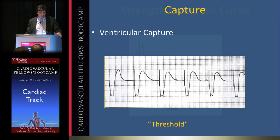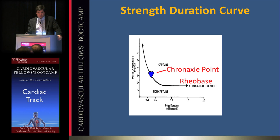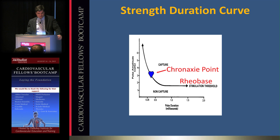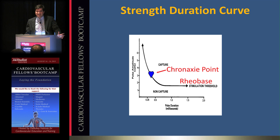Two variables control pacemaker output: pulse amplitude (voltage) and pulse duration (pulse width). Everything above a certain amplitude achieves capture; below it does not. As you increase pulse amplitude you need less pulse duration to capture, and vice versa. Beyond a certain pulse duration, capture becomes constant regardless of further amplitude increases. These two variables allow you to maintain capture in a pace-dependent patient.